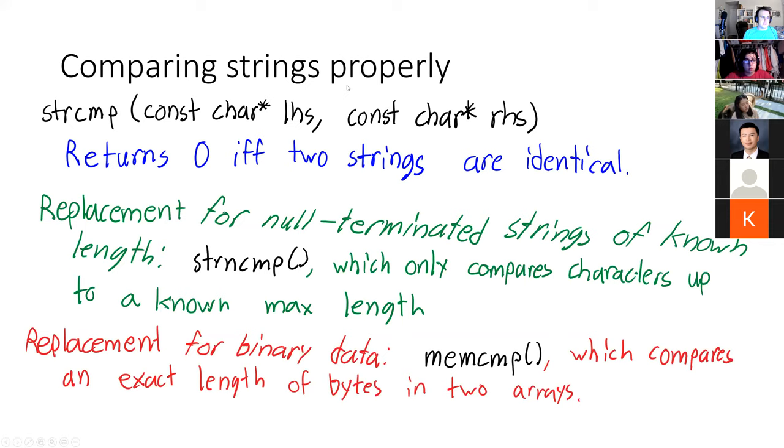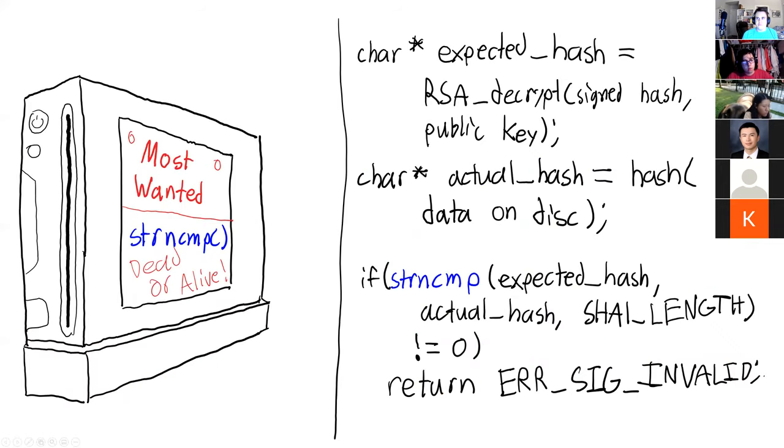If you're comparing null terminated strings of a known maximum length, you can use strncompare which only compares characters up to a known max length. If the strings seem to be longer than that, it will stop and just compare only up to there. And then if you're comparing binary data, not strings, you have memcompare which always compares an exact number of bytes in two arrays up to a certain thing. Strncompare will stop if it sees a null terminator first. Memcompare will always compare the full length. Otherwise they're pretty similar.